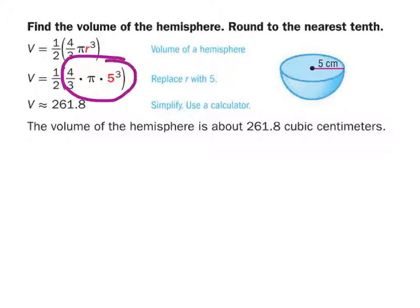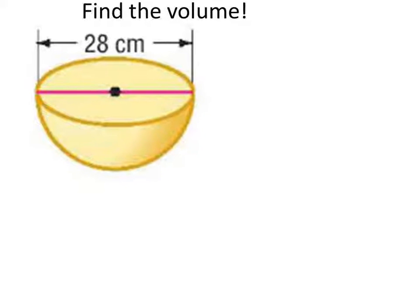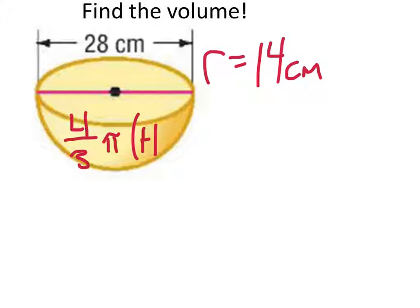Four-thirds pi r cubed right here, but it's cut in half, because the sphere has been cut in half. Find the volume of this. What's the radius? Dawson? 14 centimeters. Very good. We're going to treat this as though we're a full sphere. Four-thirds pi times 14 cubed. What does that equal? Something kind of big, right?